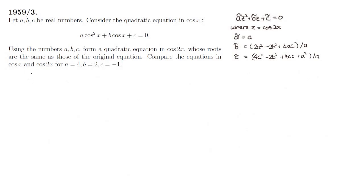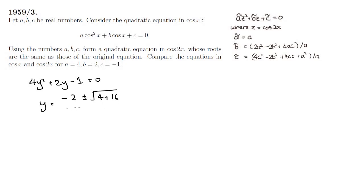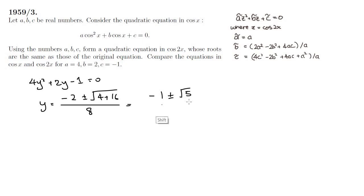The original equation 4y squared plus 2y minus 1 equals 0 has roots given by the quadratic formula: minus 2 plus or minus the square root of 4 plus 16, all over 8. This simplifies to minus 1 plus or minus root 5, all over 4.